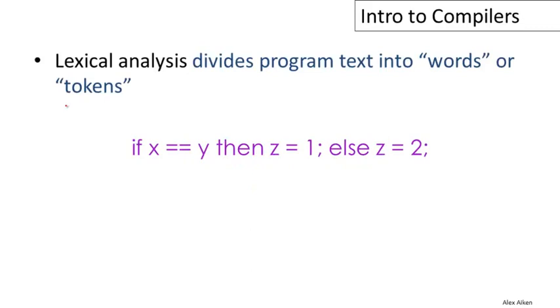The goal of lexical analysis is to divide the program text into its words or what we call in compiler speak, the tokens. Here's an example piece of program text. Let's walk through this and identify the tokens. There are some obvious keywords like if and then and else that we want to identify. Then there are variable names, things like x and y and z. There's also constants, things like the number one and the number two. And then there are some operators. Double equals is one, and the assignment operator is another.